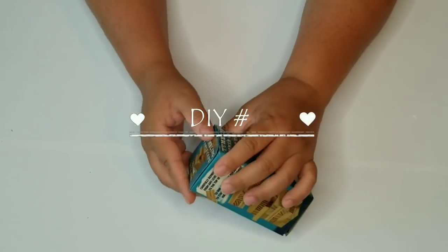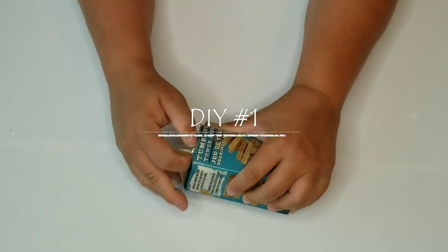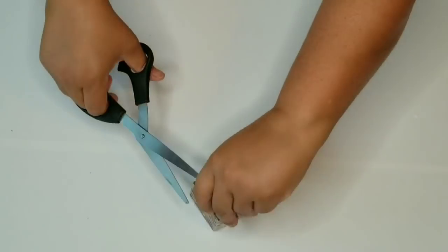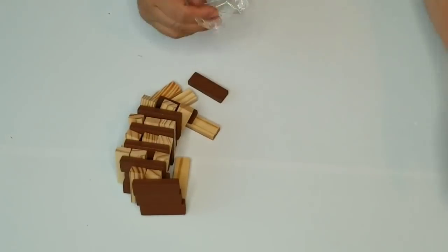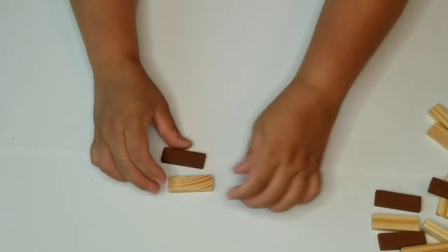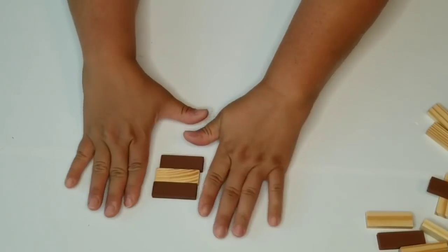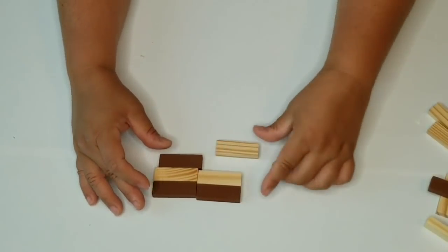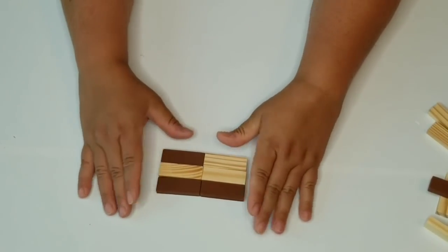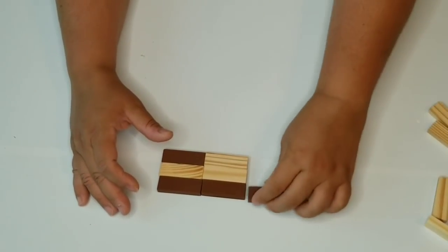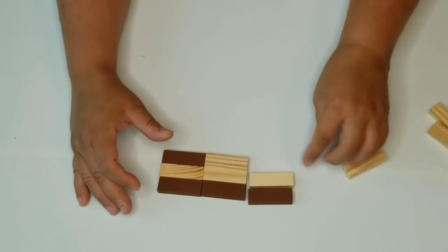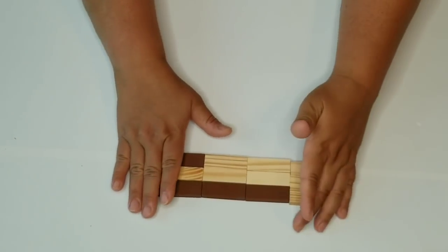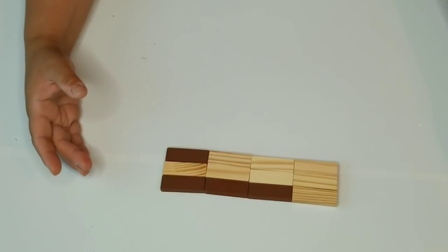Alright, so for my first DIY, I am using Dollar Tree tumbling blocks. And I'm going to use actually all of the blocks. And what I'm going to do is for the sailboat that you saw in the beginning, I am building the boat part of it.